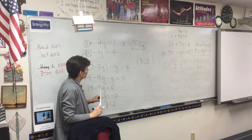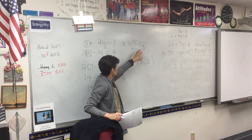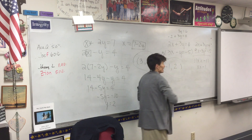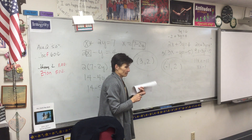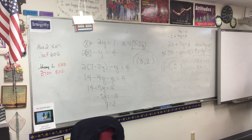For the first problem, the answer is the ordered pair (3, 2) — not the expression 7 minus 2y. It was boxed because I substituted it in, but the answer is the ordered pair. We will pick up here tomorrow, and we'll have one more review day after that.